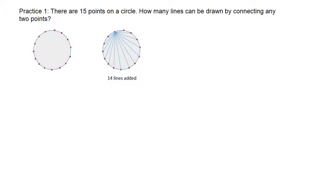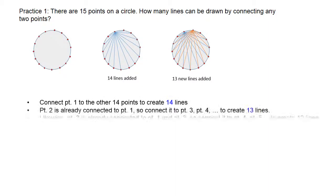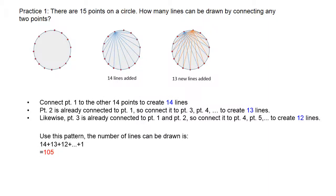Now extend to the second point. What happens if I do the same thing with point two? From point two, I also connect to all the other points. However, point one and point two are already connected, so I don't need to connect them again. Connecting point two to the other points creates only 13 new lines, because we don't repeat the one already there. Using this pattern with point three, connecting without reconnecting to point two and point one creates 12 more lines.